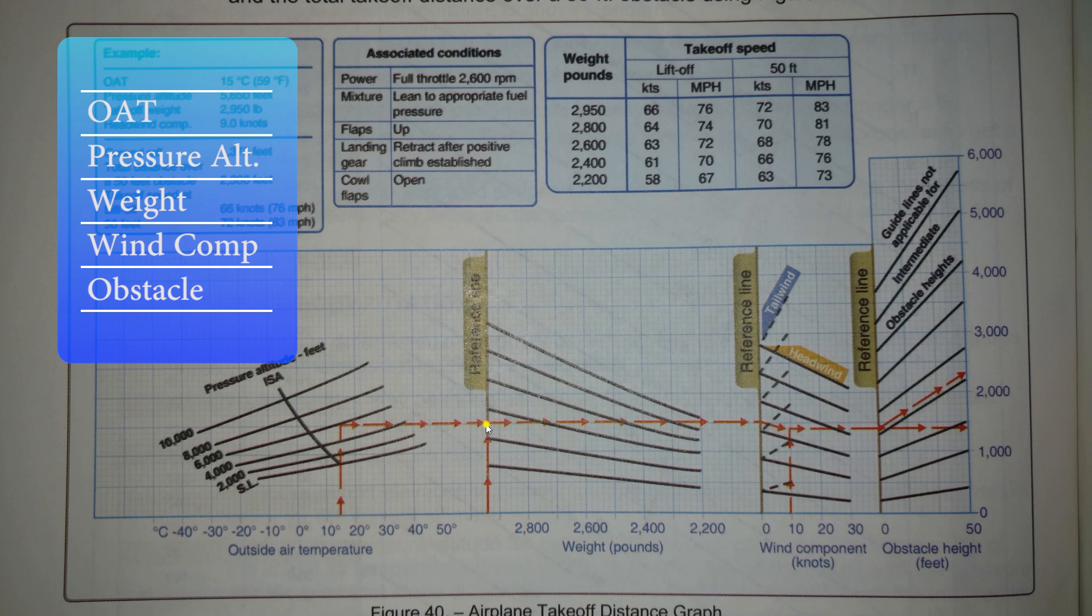So if we come over here and intersect right here, and we're going to 2,600 pounds, we would follow the trend lines down to where 2,600 pounds meet roughly where that trend would be, and then proceed straight across. So let's go ahead and work through an example here.